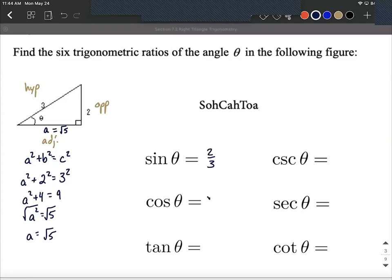Cosine is the adjacent over hypotenuse, square root of five over three. And then the tangent is opposite over adjacent. So we could say two over the square root of five.